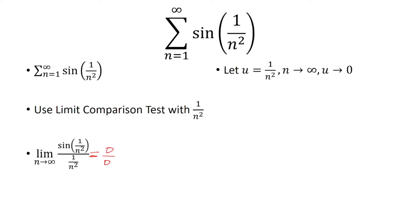So instead of n approaching infinity, we say u approaches 0. Then we have sine of u over u, which we know is equal to 1.